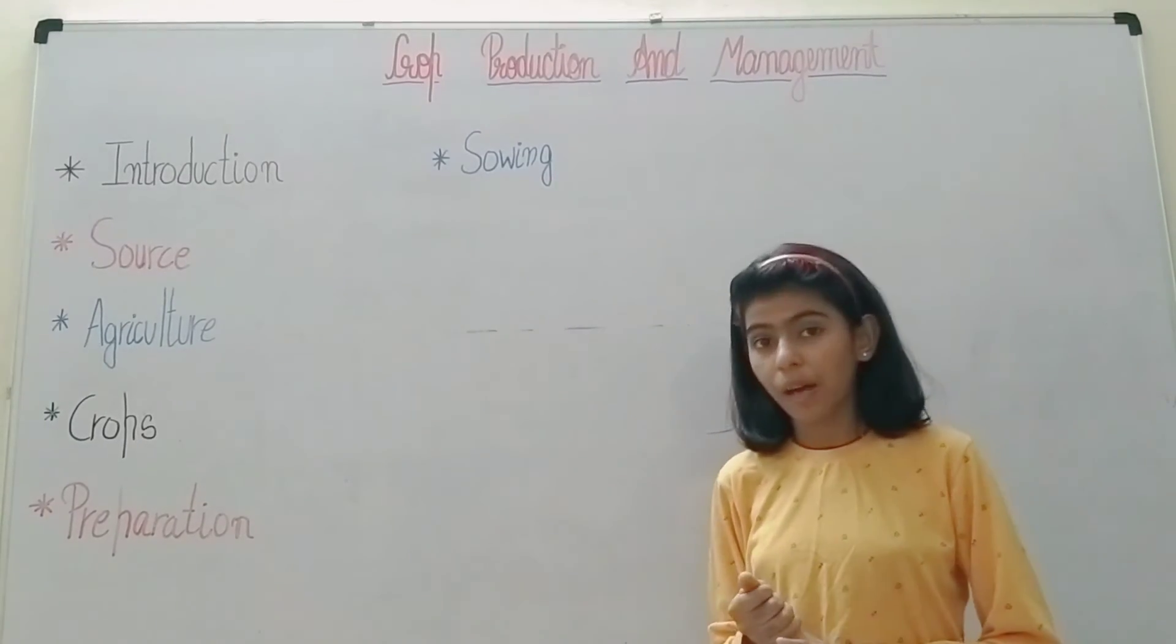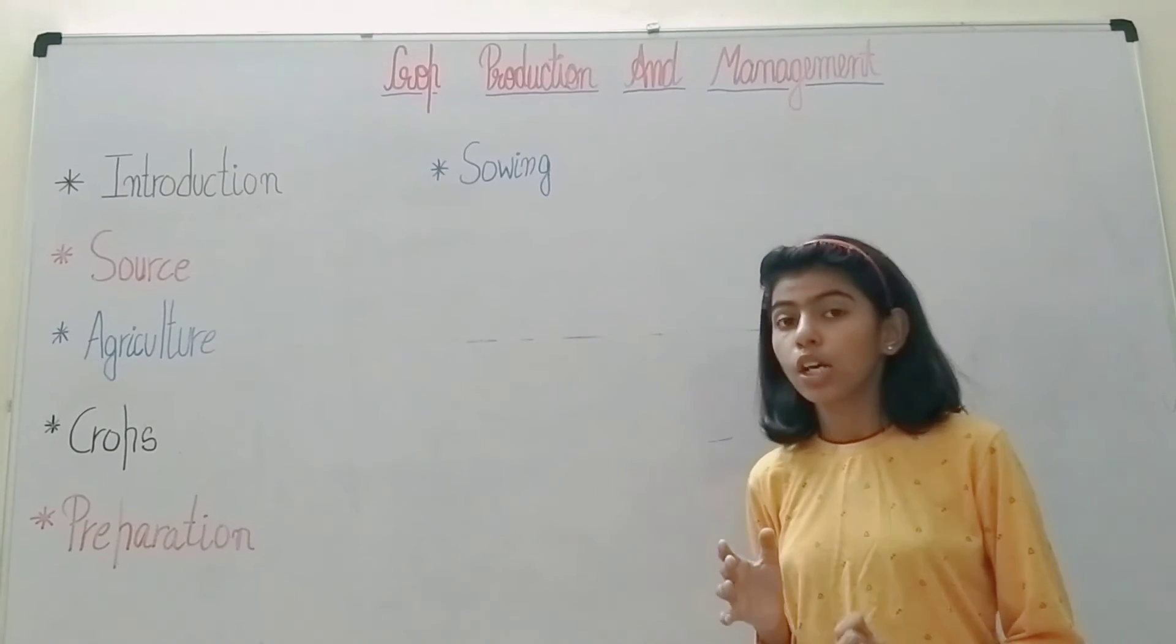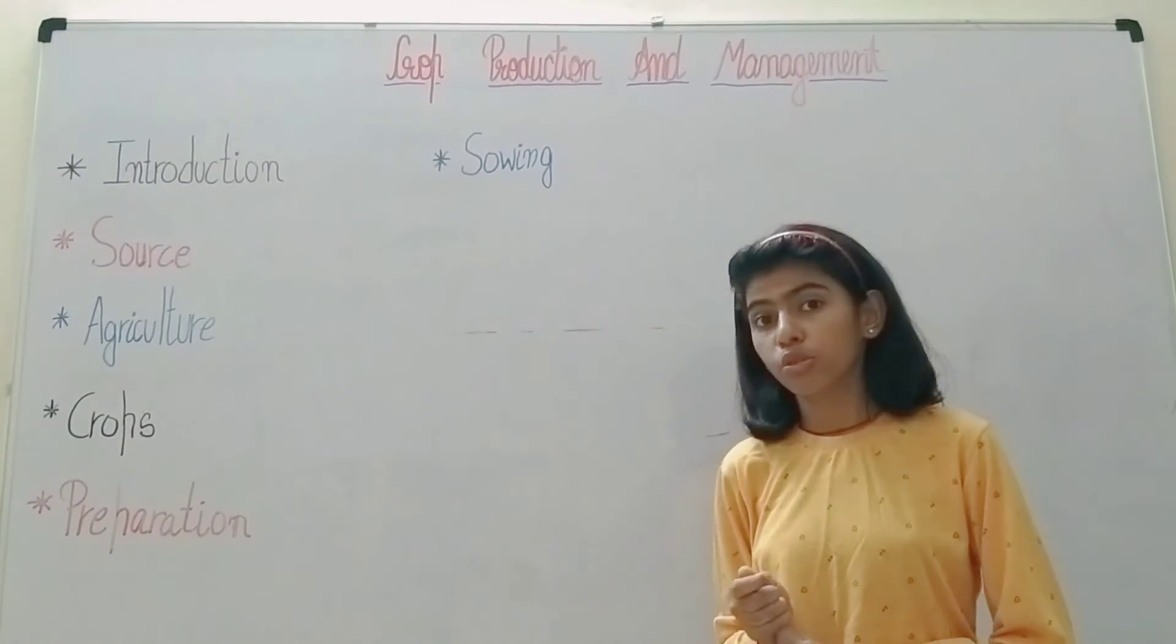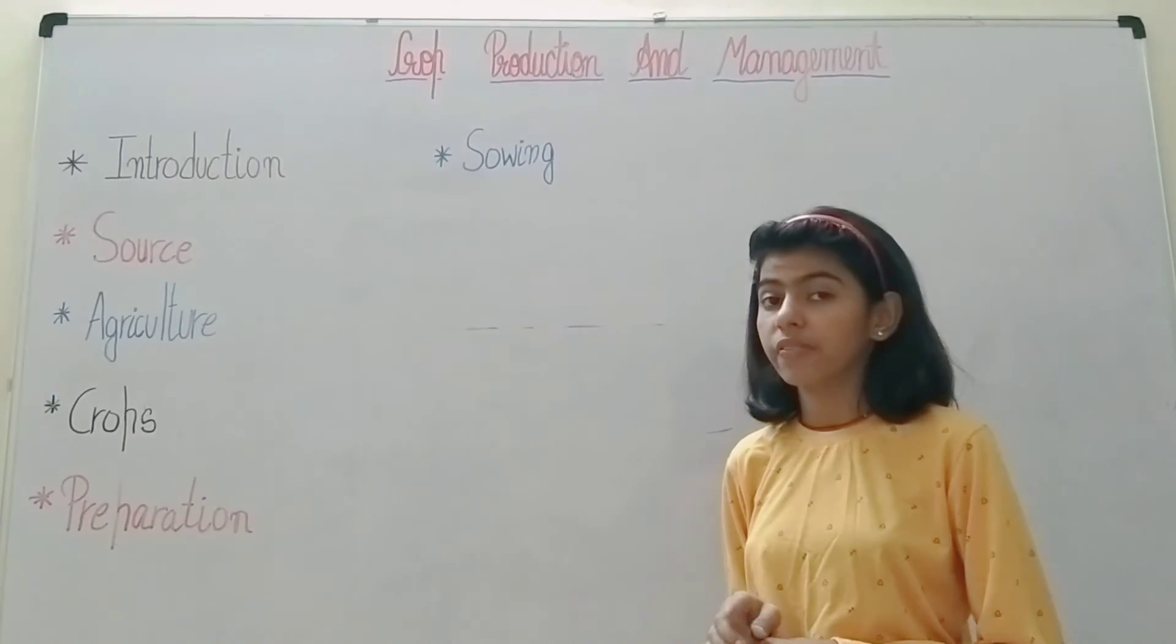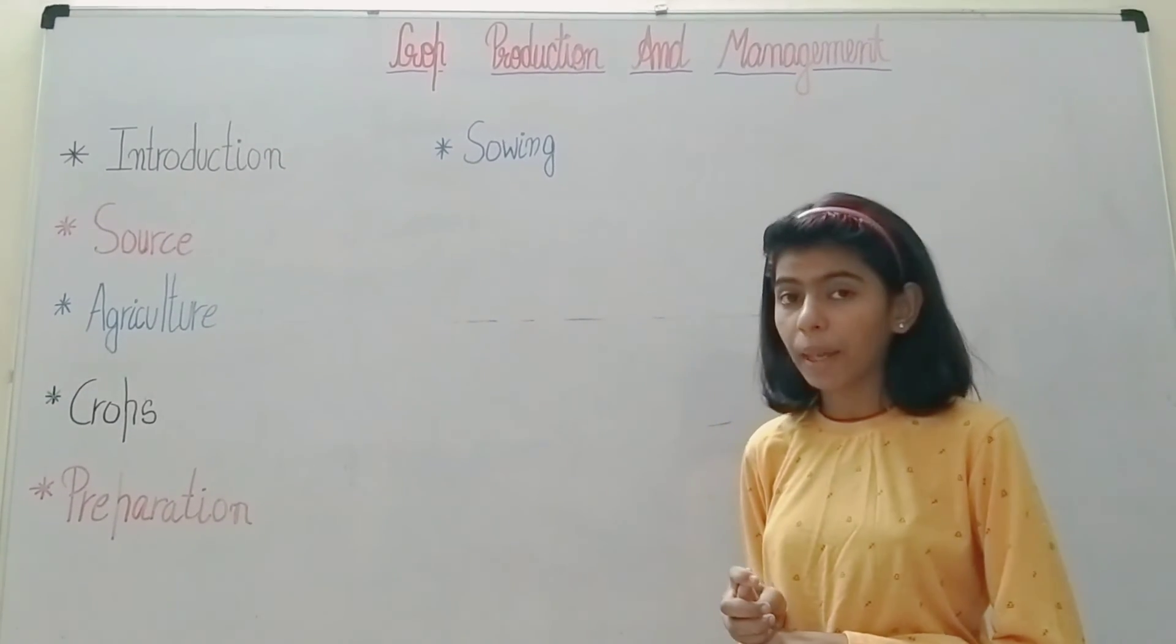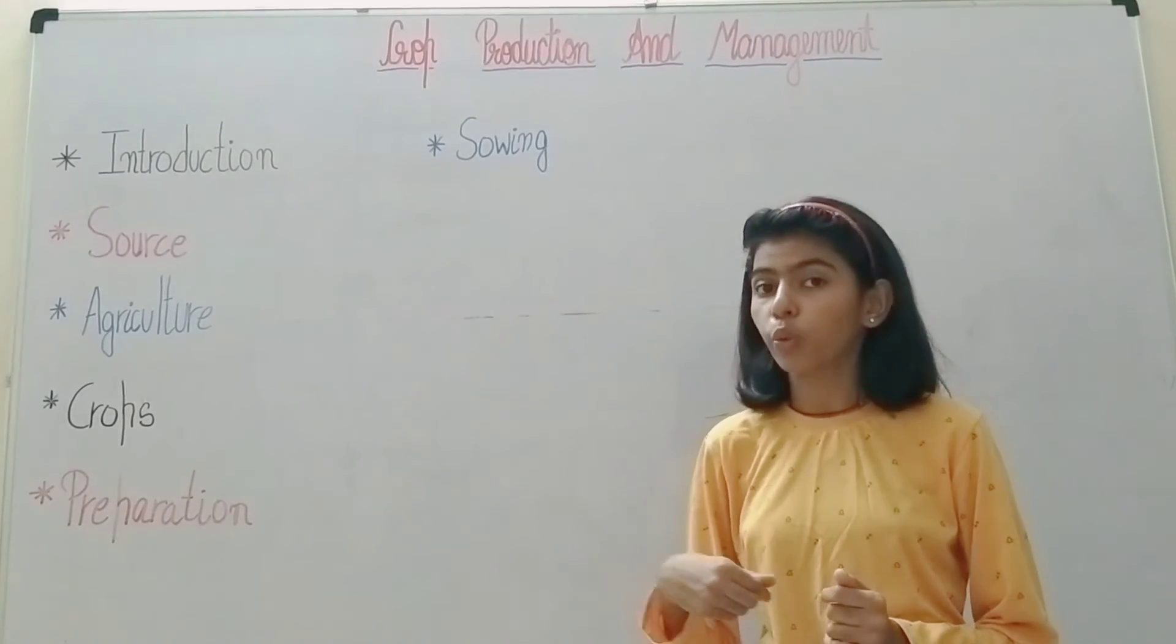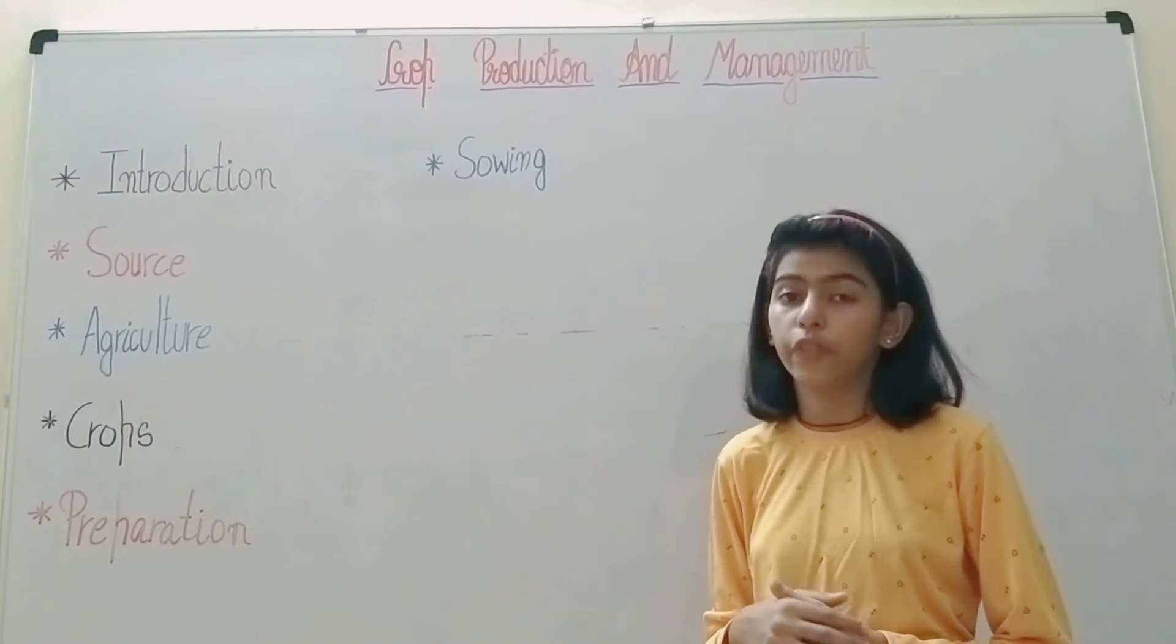Seeds should be free of insects and pests. Sowing includes two processes: broadcasting or manual. Manual means seeds are thrown on different parts of the land.